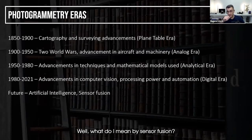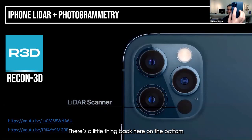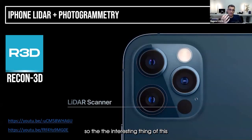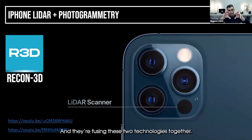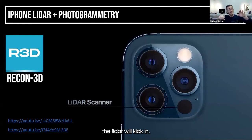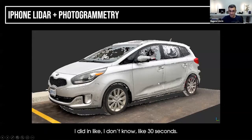Then there's sensor fusion. On the back of the iPhone there's a little sensor on the bottom — that's basically the LiDAR sensor. What this company is doing is fusing photogrammetry and LiDAR together. When photogrammetry starts to fail or hits its weak spots, the LiDAR will kick in. And when the LiDAR is at its weak point, the photogrammetry will kick in. We get some really incredible results — for example, I scanned this car in about 30 seconds, just walking around the vehicle.